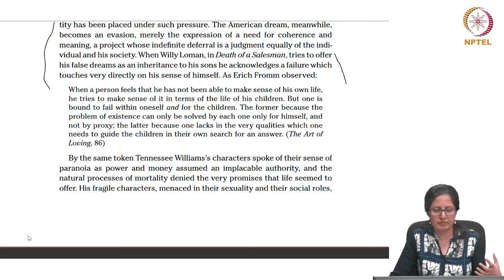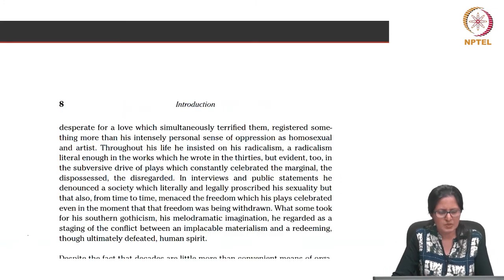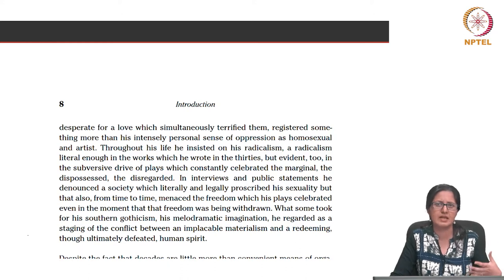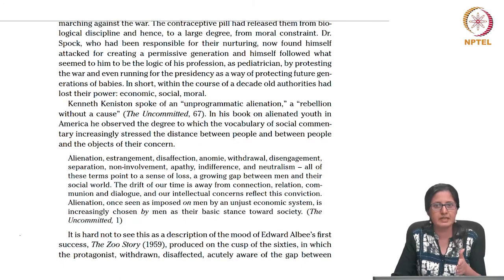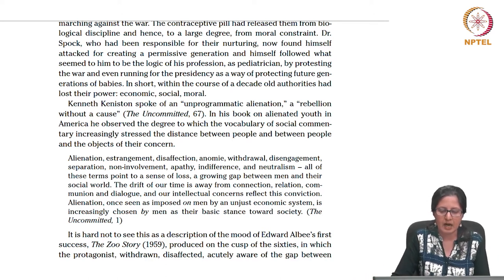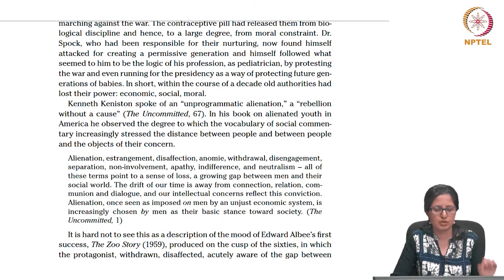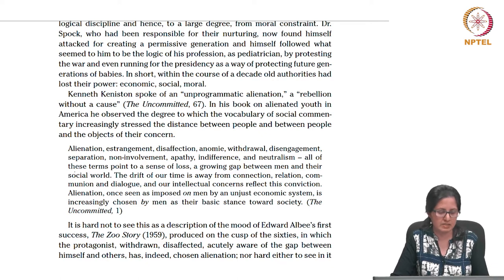In The Zoo Story also, we find these absent parents, and hence there is no dream, nothing in fact that a character can inherit — as we noticed in The Zoo Story. This also leads to a lot of paranoia; most characters whom we have met through these plays seem to be paranoid in some form or the other. Briefly, let us also talk about Edward Albee's The Zoo Story, 1959. In some sense it could be defined as unprogrammatic alienation, a rebellion without a cause. As Kenneth Keniston in his work The Uncommitted describes this mood — which we also find getting reflected in Albee's Zoo Story.